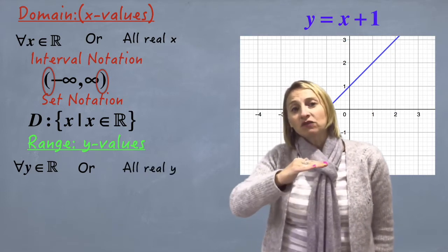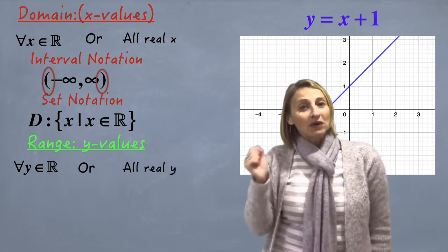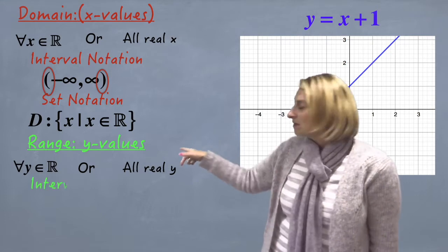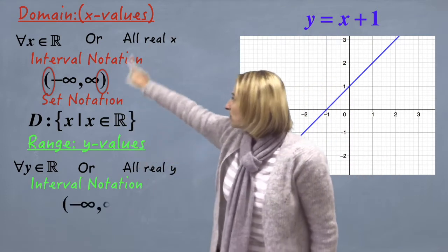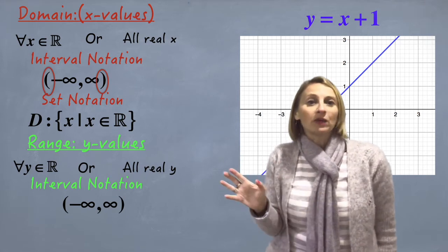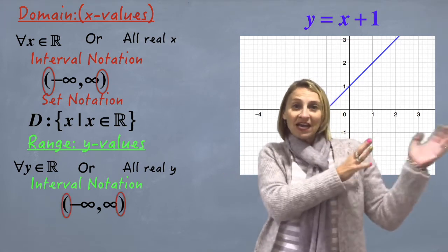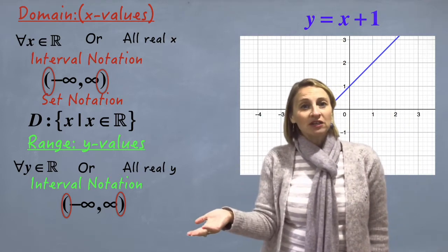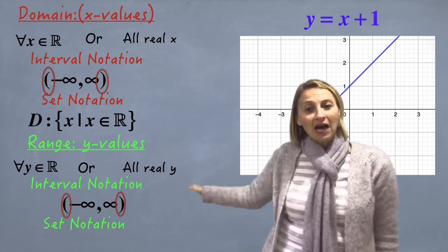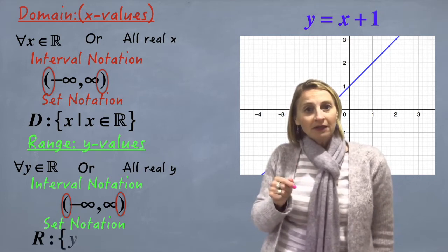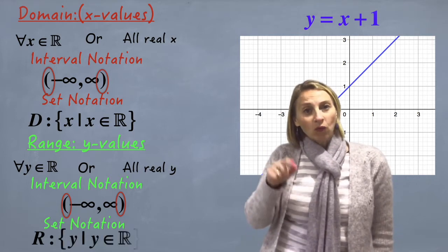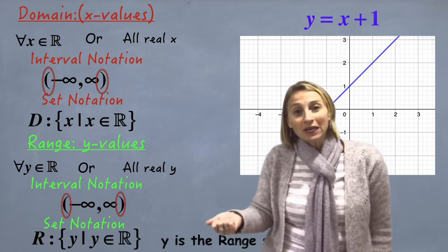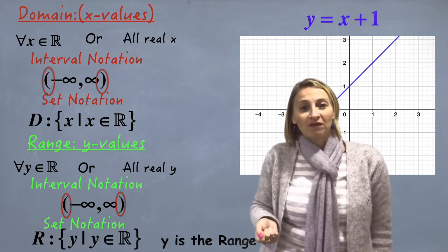Now we want to write it into interval notation and set notation. Interval notation says from where to where. We know it's from minus infinity to infinity because it goes from any numbers on the bottom to the top. We don't want to include minus infinity or infinity because they never end, so you put round brackets. And set notation is where we put the curly brackets. So we put an R to indicate we're doing the range, put a colon, curly brackets, and then we write y such that — vertical line — y is an element of all the real numbers, which really just means all the values of y.